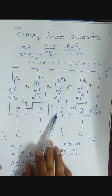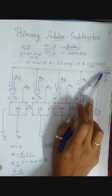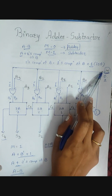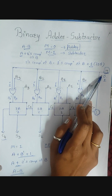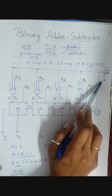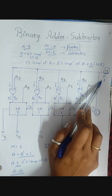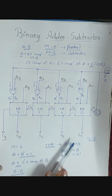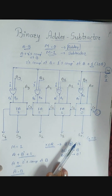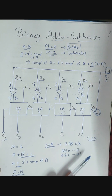So this is how the same circuit works as both an adder and a subtractor — you just need to change m. m equal to 0 works as an adder; m equal to 1 works as a subtractor. This is pretty easy. I hope you understood it. Thank you so much.